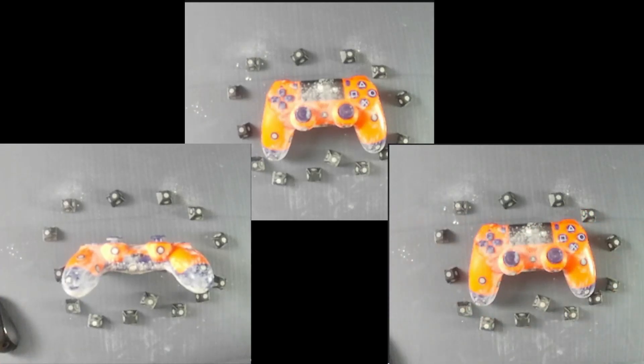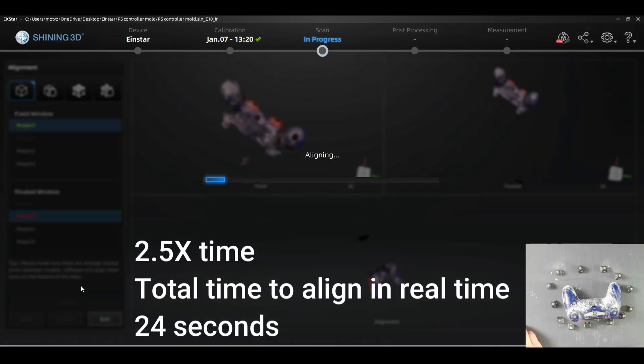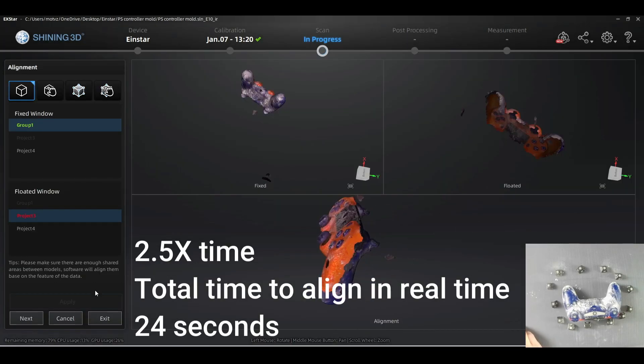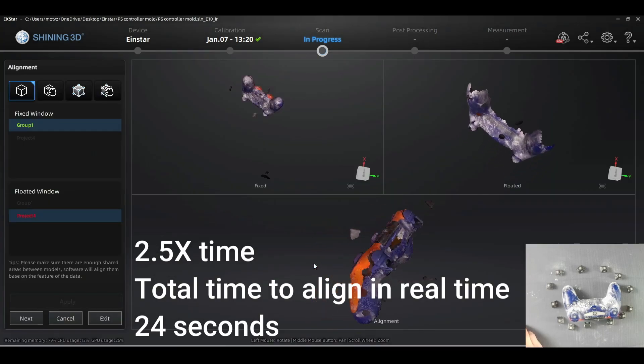After a few scans we continue to the alignment stage. The software does most of the heavy lifting for us, but if needed we can always manually align the data.